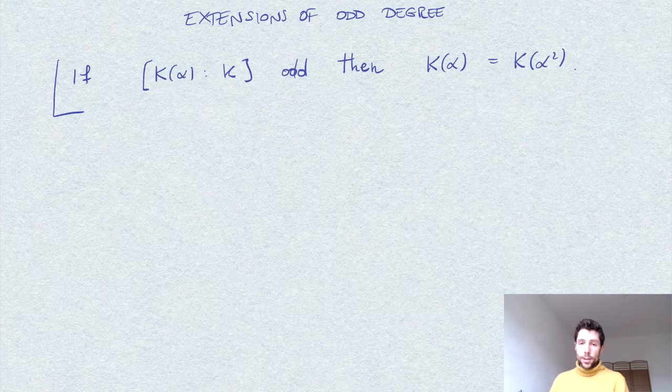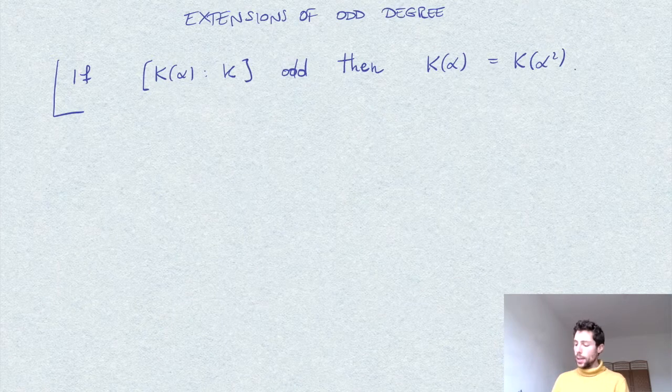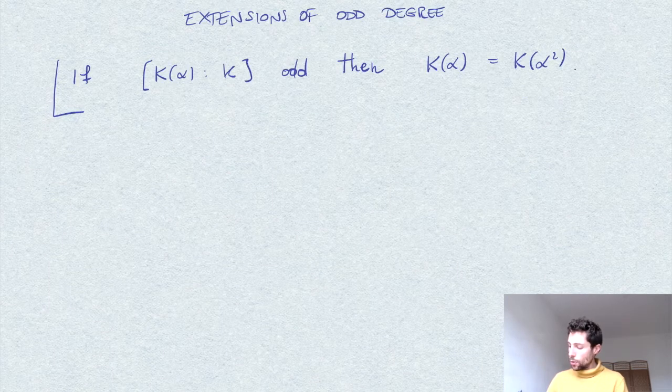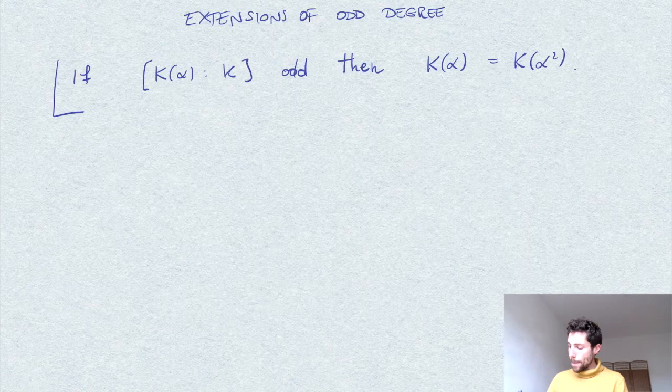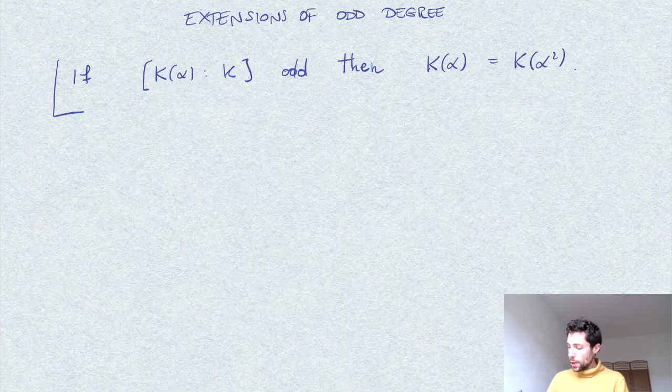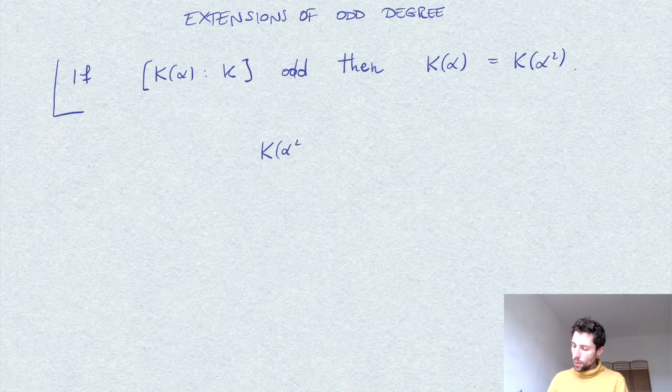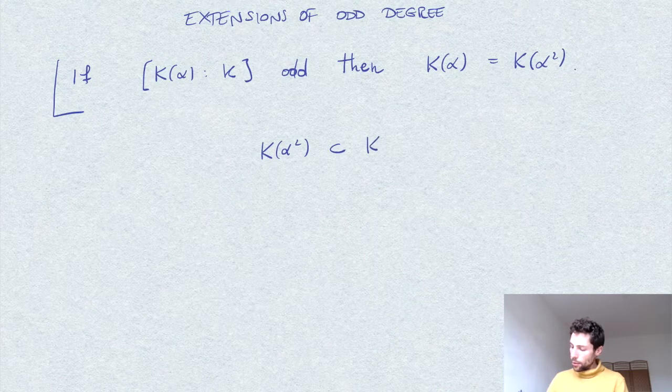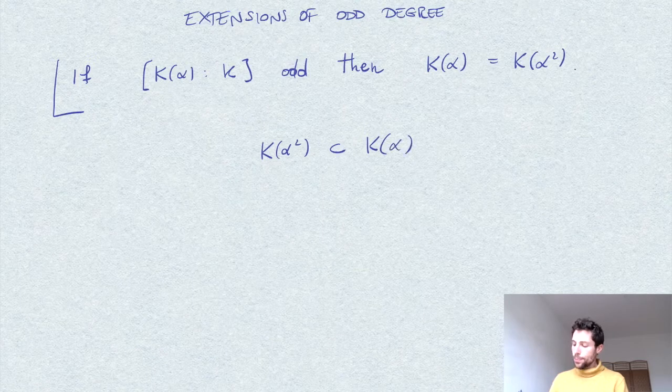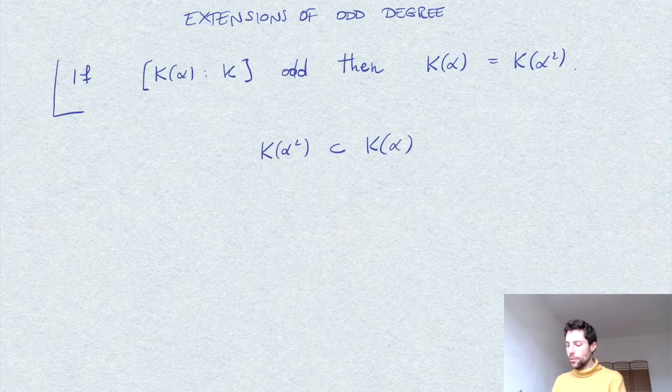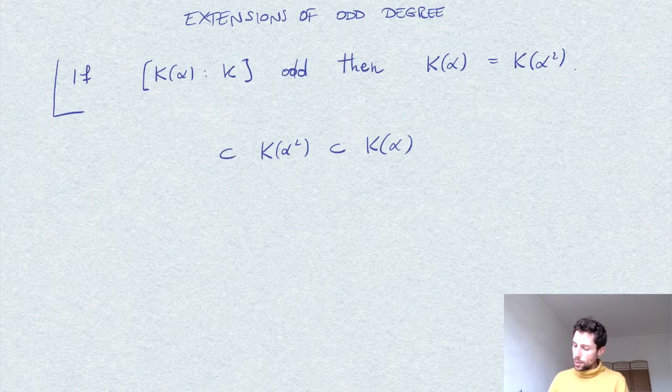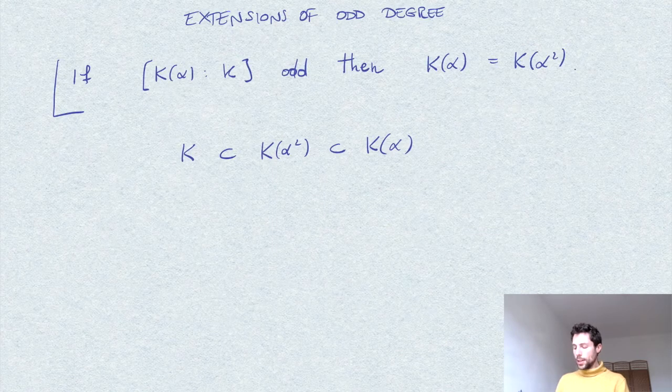And the reason is immediate by taking a look at what happens with the degrees of these extensions. We observe that K(α²) is obviously contained in K(α), right? Because in the field K(α²), we are only taking even powers of α, so we have this chain of field extensions.